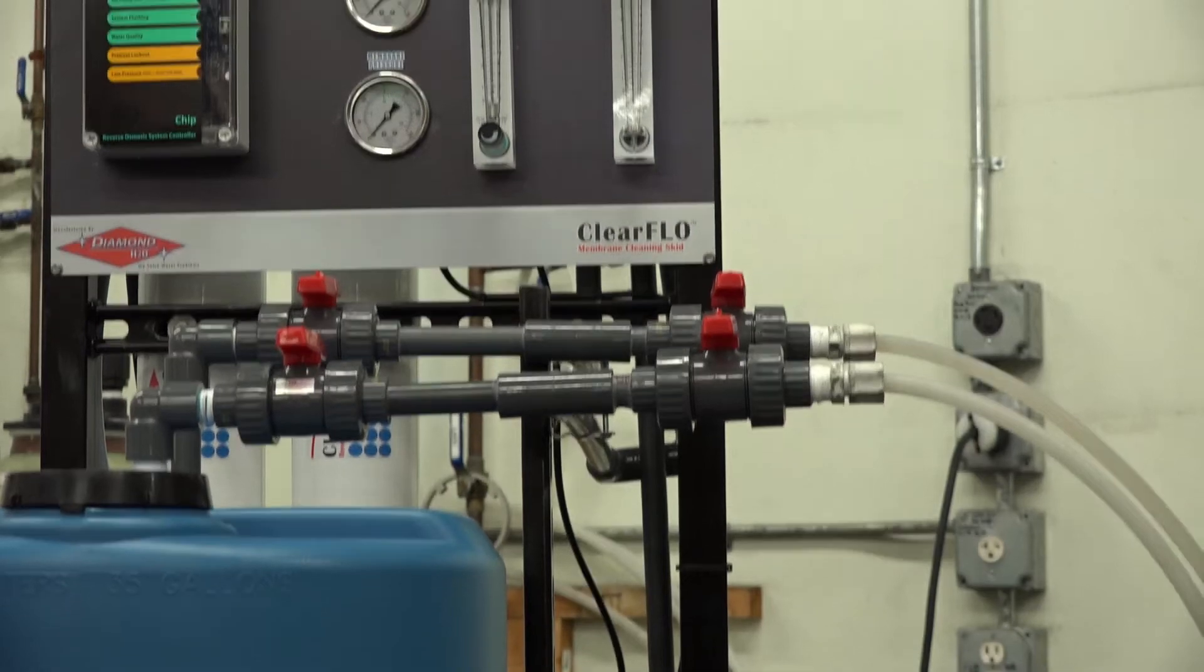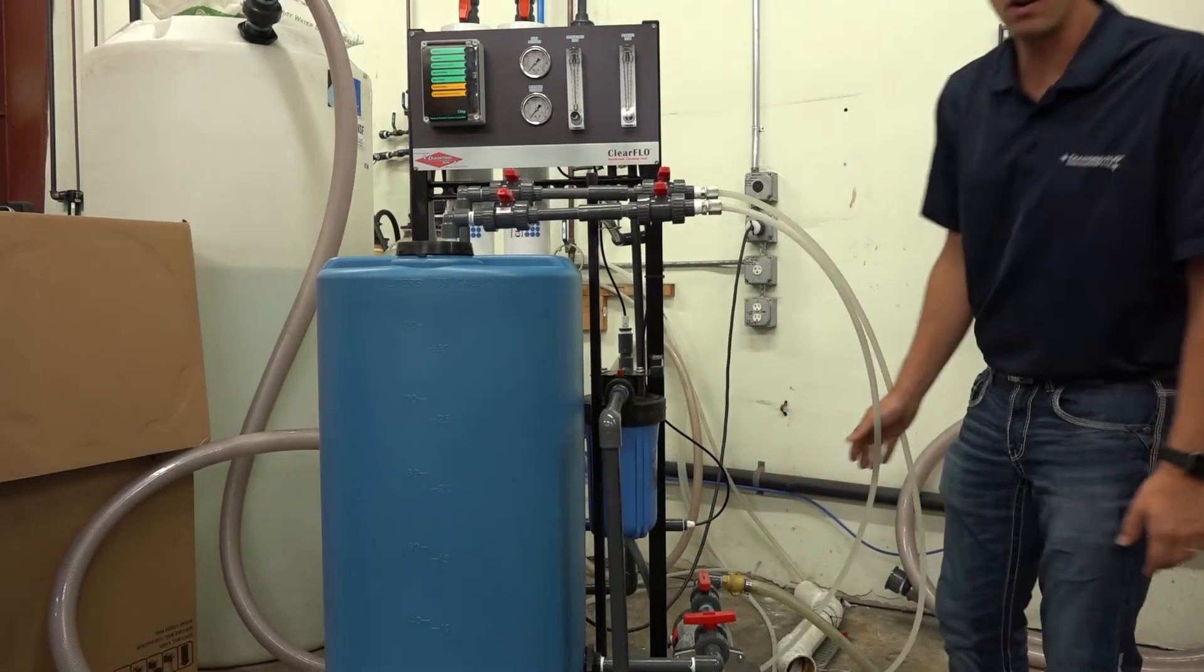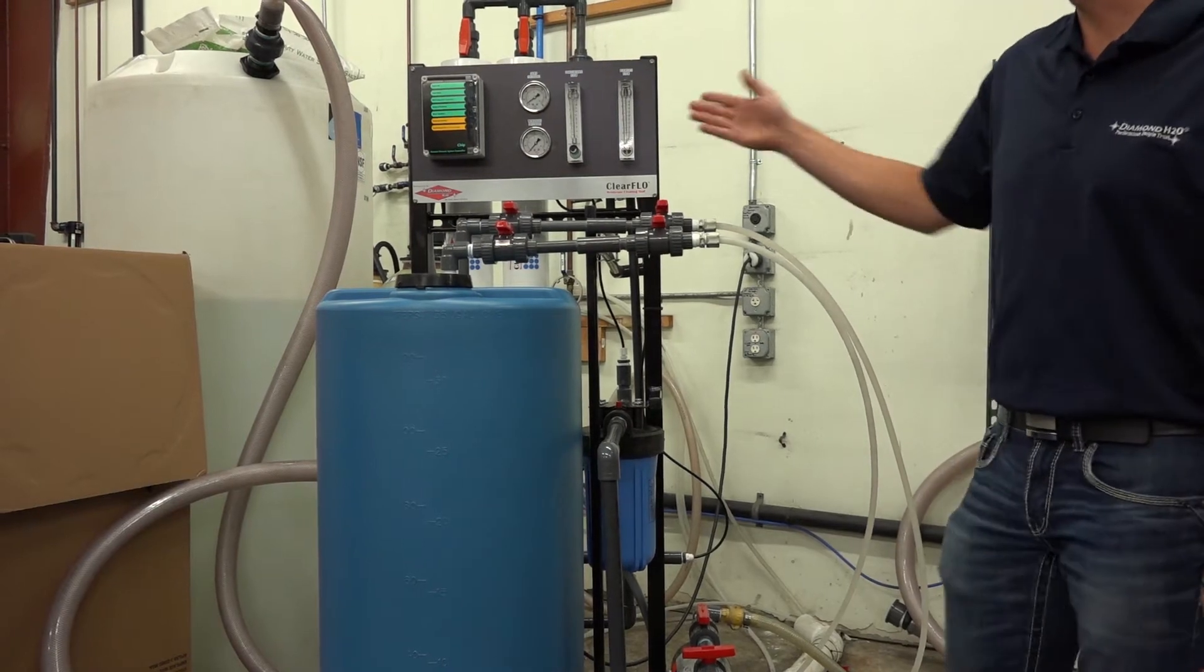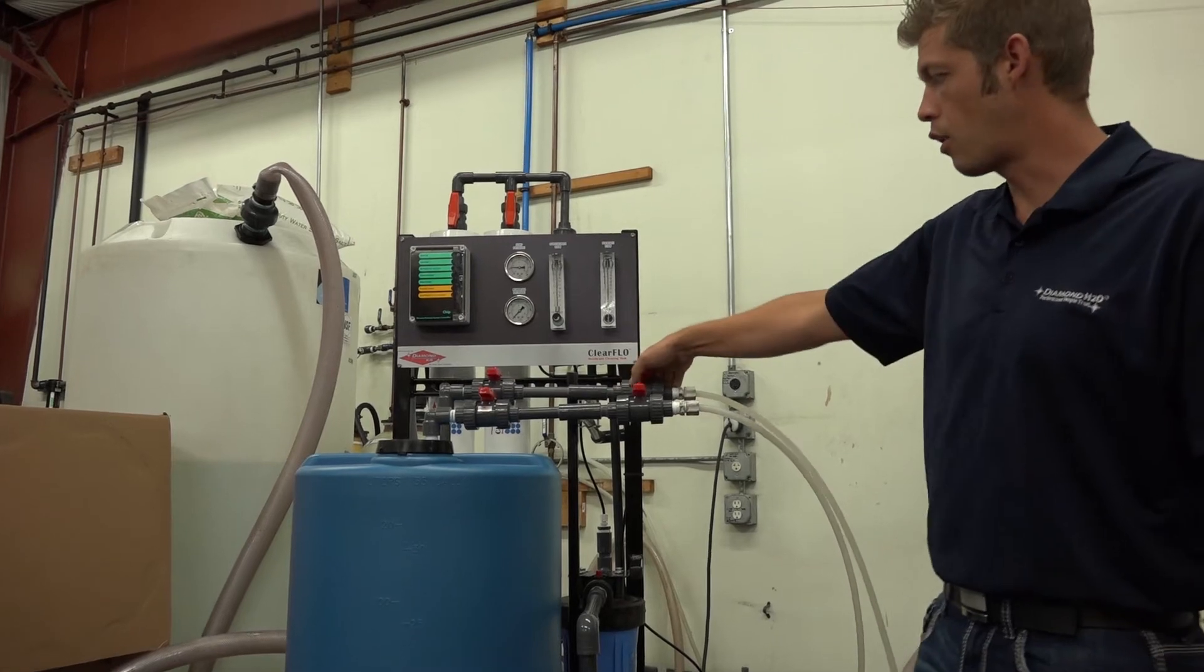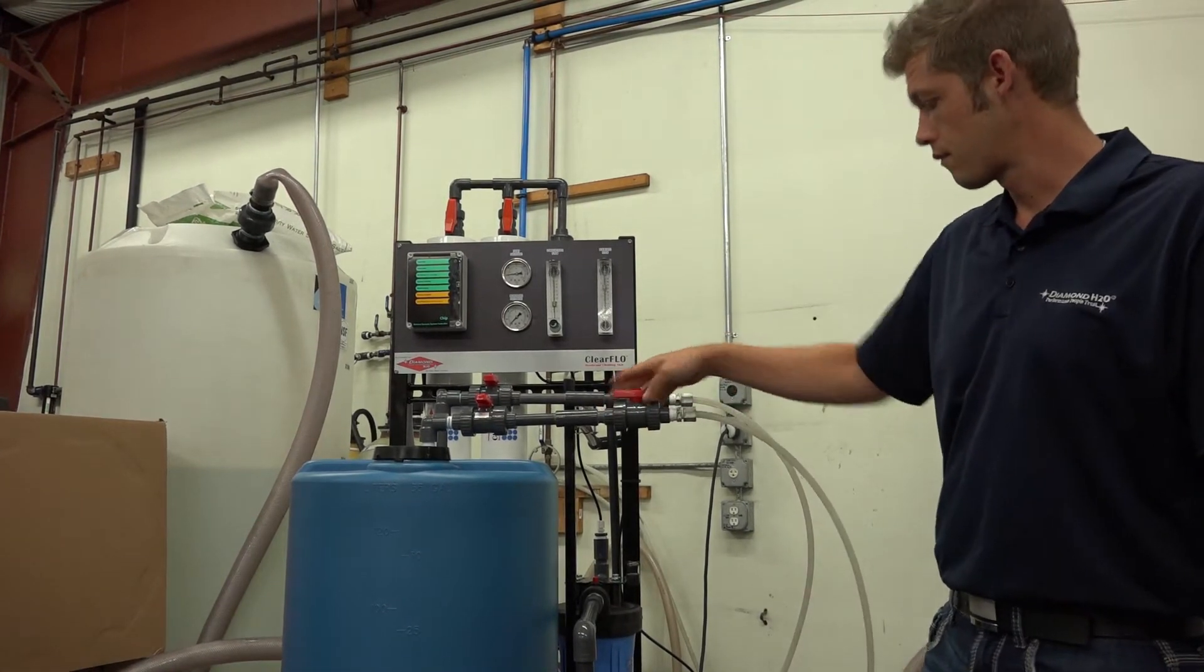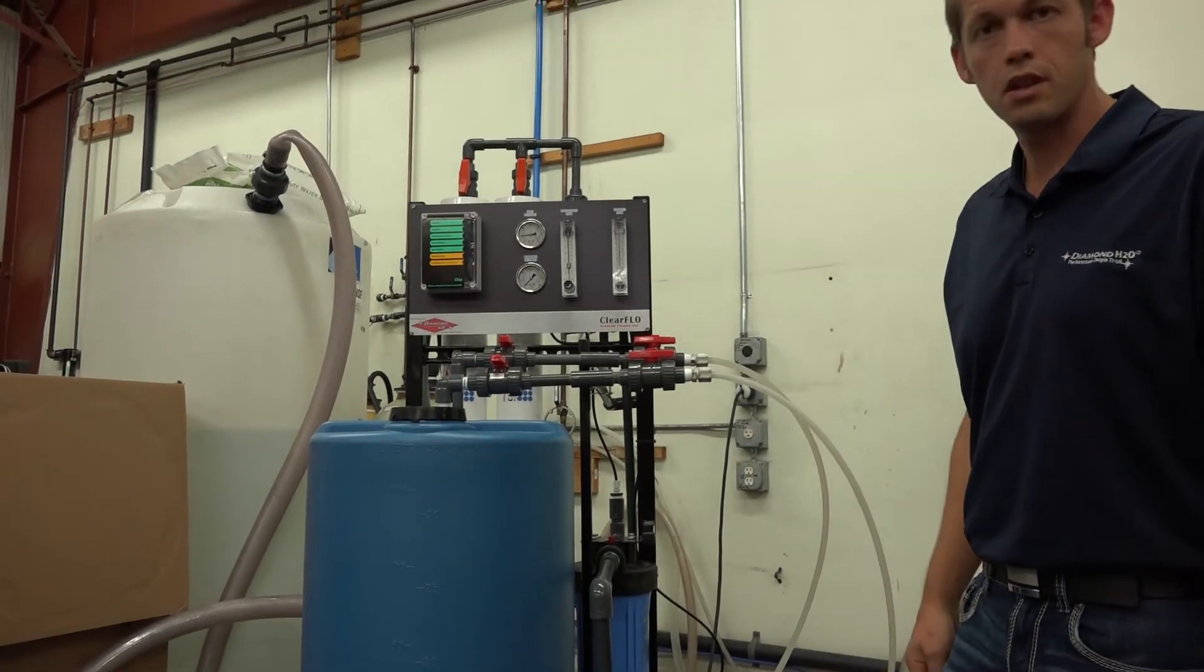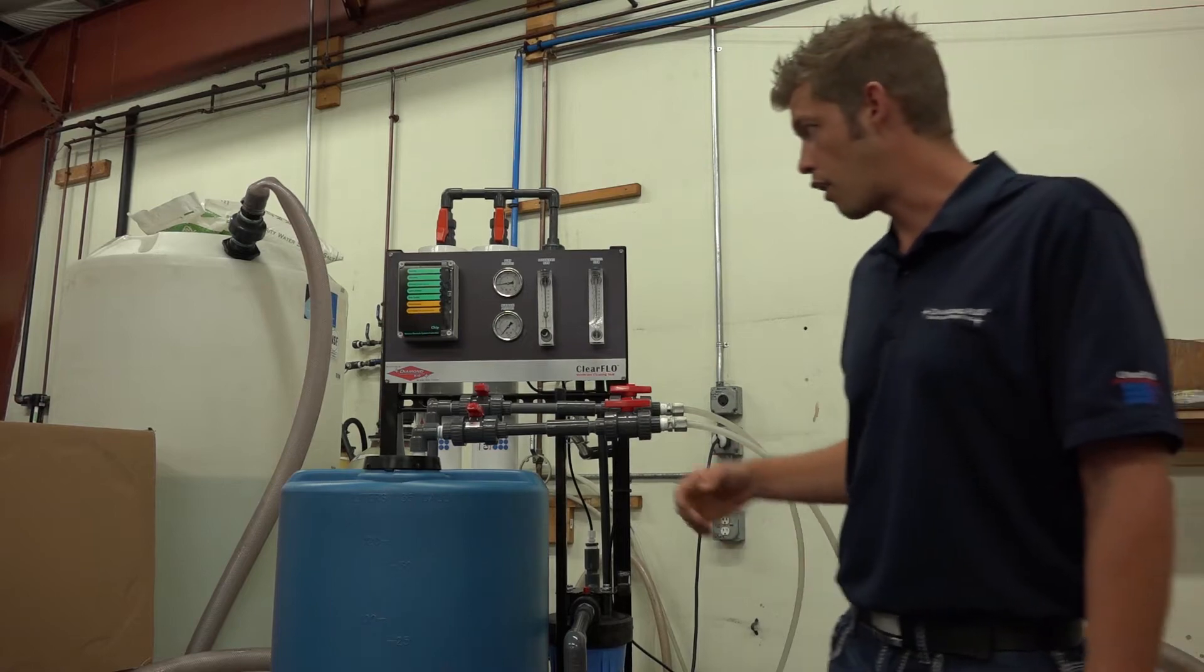To do that, turn your water onto the system. Open your inlet valve. What you'll see is water will start flowing through the system. You can go ahead and open your drain valves. And you're going to see water is going to start flowing.